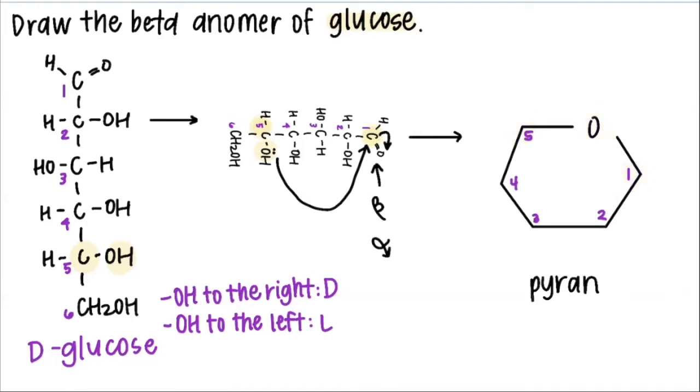Now you go through carbon by carbon and orient the hydroxyls in the way that they're shown in the fissure. So starting off with carbon number one, this is where we take into consideration the alpha or beta configuration. Since it's in the beta conformation, the hydroxyl is going to be pointing up on this carbon.